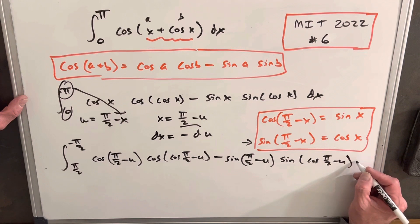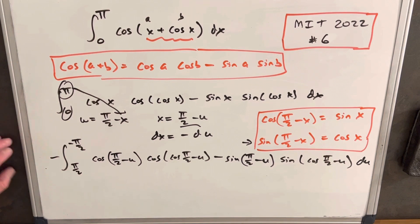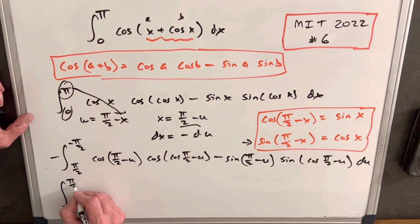And then on our du, we're going to have a minus sign, but I'm going to bring that all the way out here. Then let's transform this expression again. A minus sign allows us to flip our boundaries. Not that we have to, but let's do that. So we'll flip that and we'll have pi over 2.